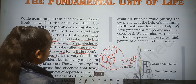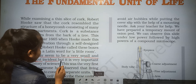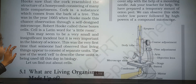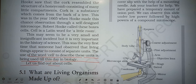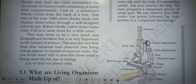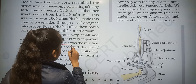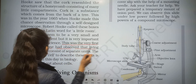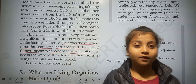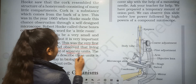This may seem to be a very small and insignificant incident, but it was very important in the history of science. It was an accidental discovery, but still it is one of the most important parts of science. This was the first time that someone observed that living things appear to consist of separate units — the cell.